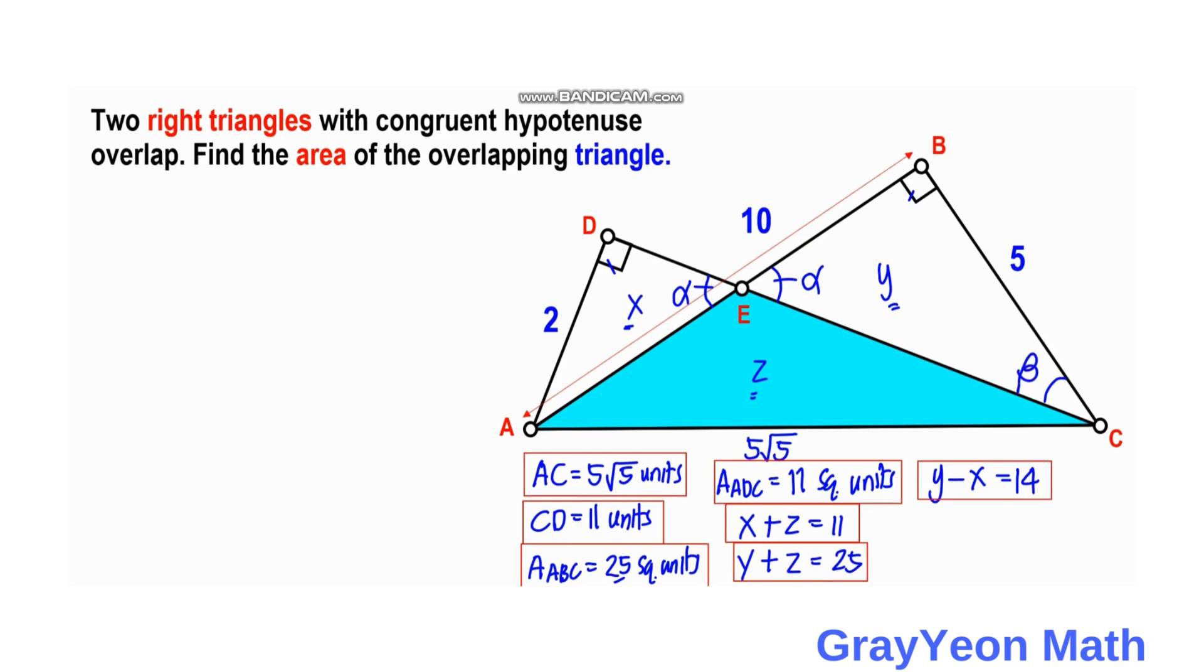And the same with ADE, if one is alpha, then this angle is beta. As you can see, the three angles for each corresponding triangle are actually congruent, so these two triangles are actually similar.